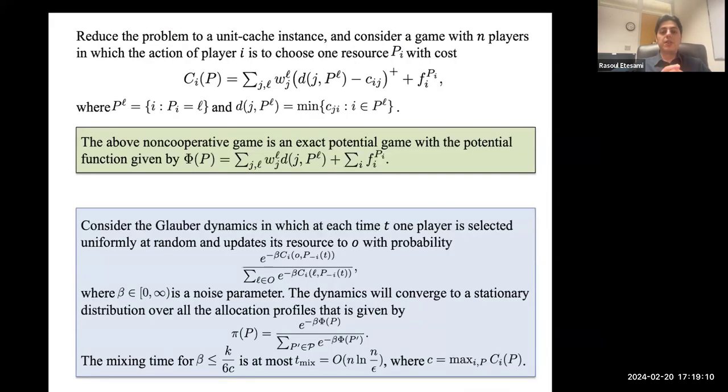So in this work, we developed two algorithms, one based on global dynamics, where basically we associate cost to different agents. And we let the agents update their resources based on probabilities which are proportional to those costs. And we show that these dynamics converge to some good suboptimal solution if the noise parameter lies within a certain range.